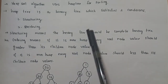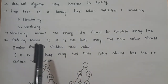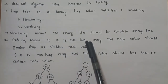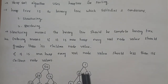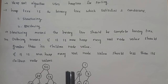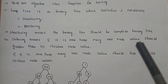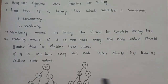The two conditions are the structuring property and the ordering property. The structuring property means the binary tree should be a complete binary tree.